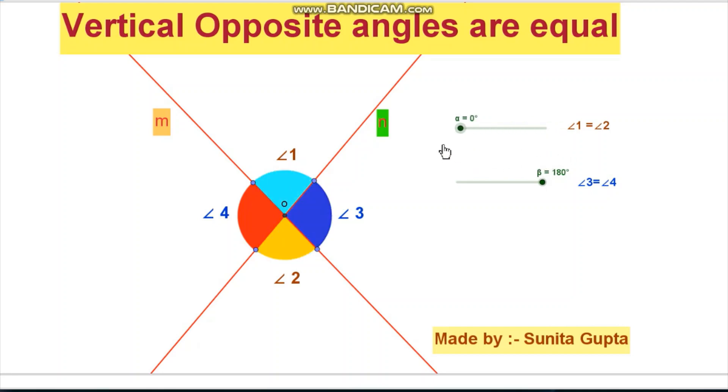The second pair of vertical opposite angles are angle 3 and angle 4. Angle 3 is equal to angle 4, as shown on screen.